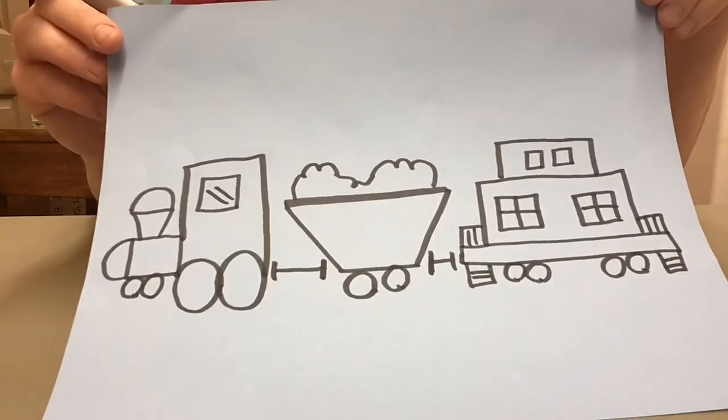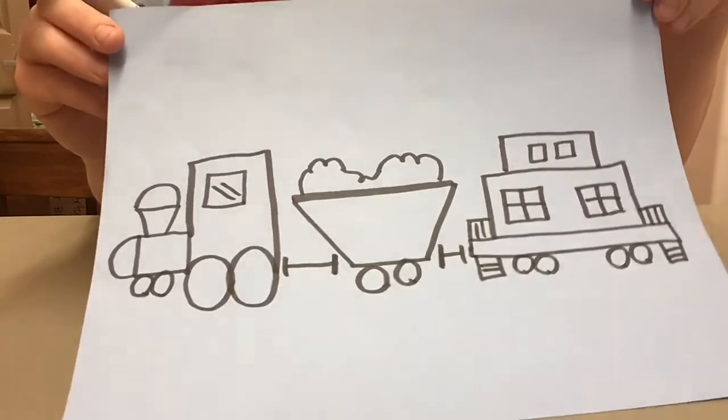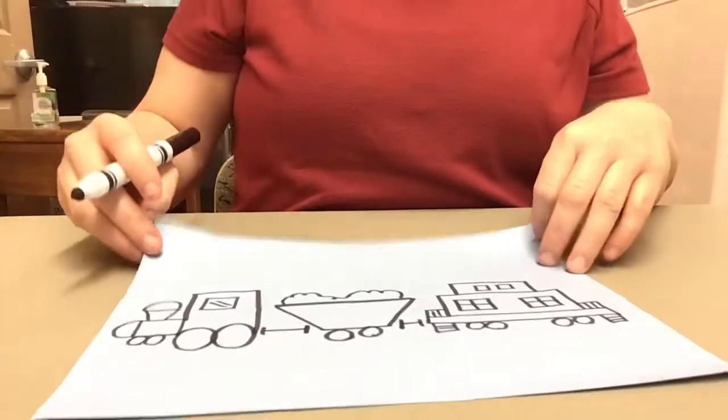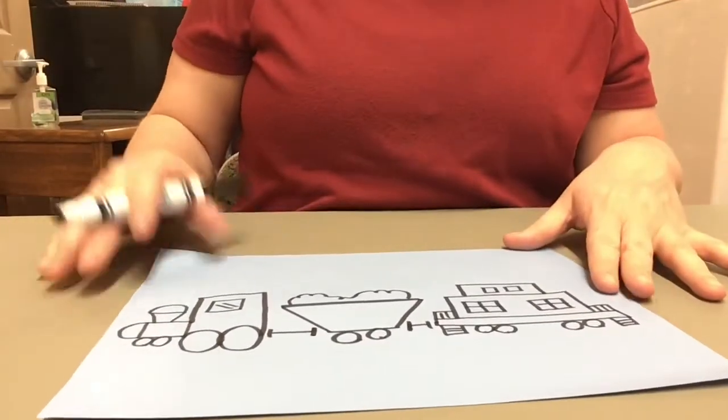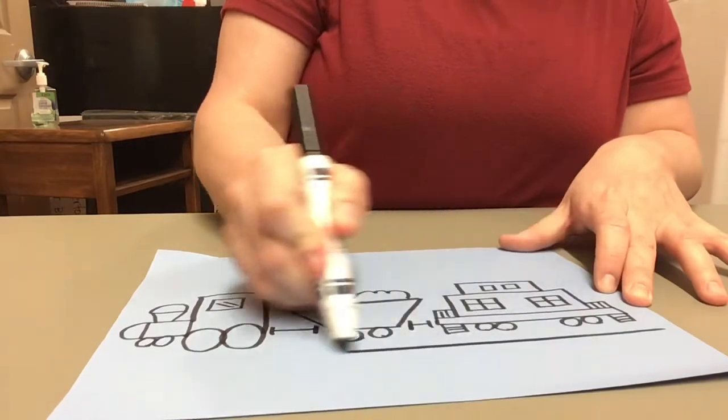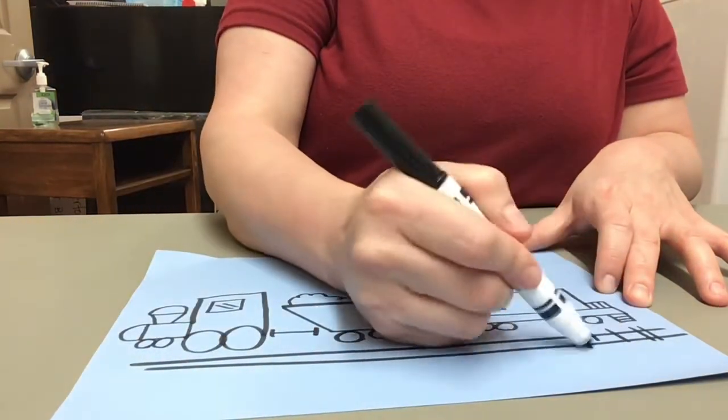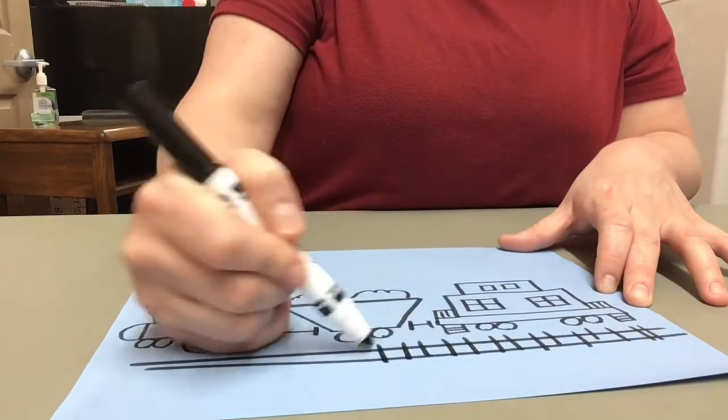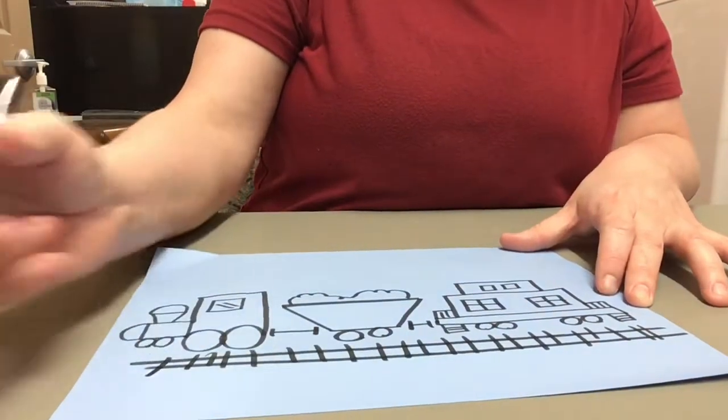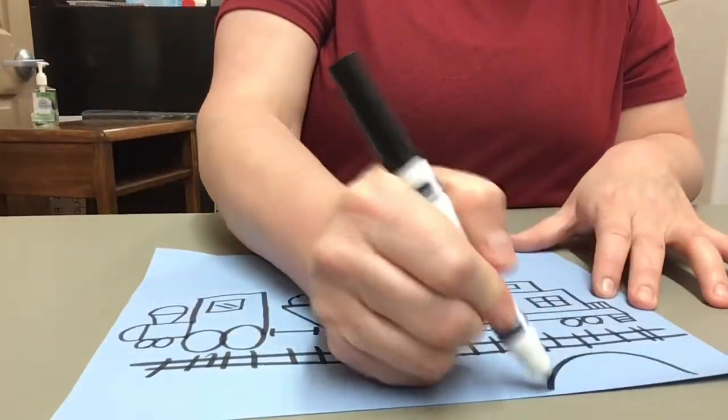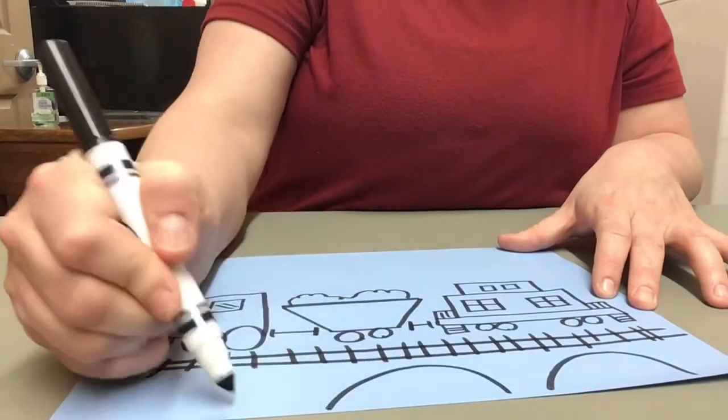What do you think? Pretty cool, right? Now you can add whatever you want to yours. If you want the train tracks to be going over a bridge. You're going to use your half circles again.